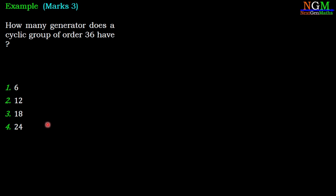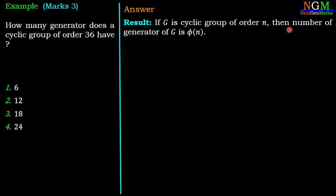It is the most common concept of abstract algebra which is asked in the examination. To solve such examples we have to recall one result: if G is a cyclic group of order n, then the number of generators of G is φ(n).